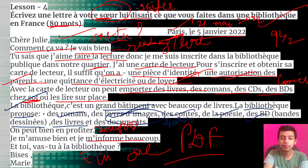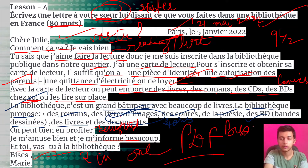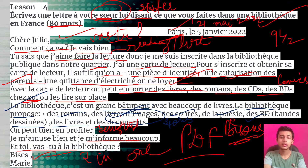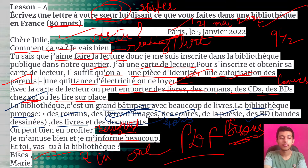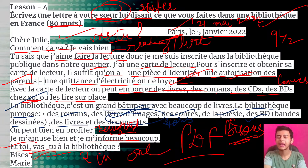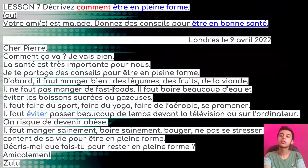'Je m'amuse bien et je m'ennuie beaucoup' — I am very much happy and amused. 'Et toi, vas-tu à la bibliothèque?' — and what about you, have you gone to the library? Tell me. 'Bisou' — kisses — 'je t'embrasse' — yours truly — we use this. The last line says I am amused and very happy. This was the first letter.